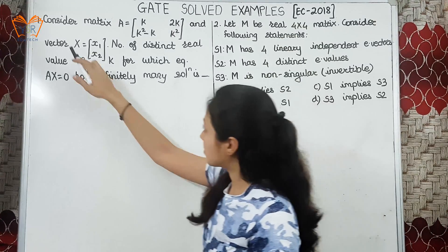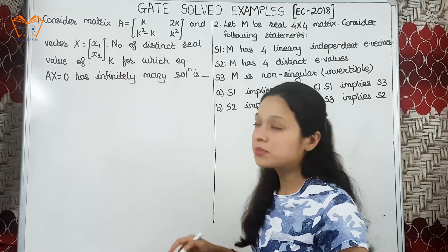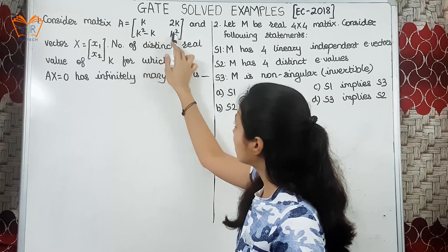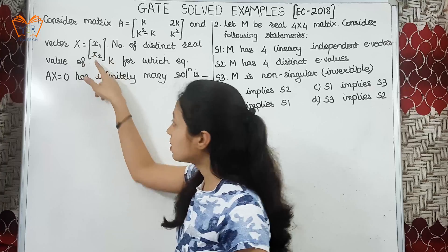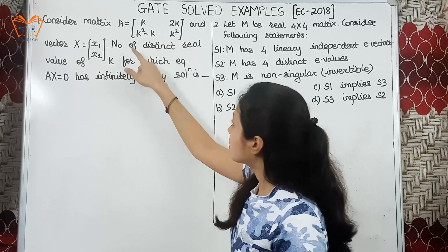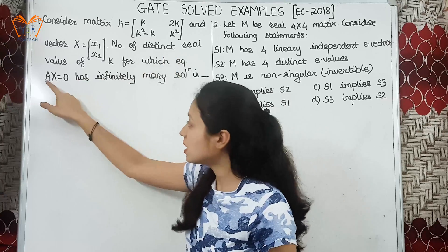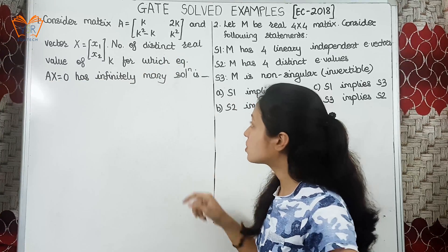Let us start with the first example. It says, consider matrix A is equal to the elements are k, 2k, k square minus k, k square and vector x is equal to x1 x2. Number of distinct real value of k for which given equation A into x is equal to 0 has infinitely many solutions is.